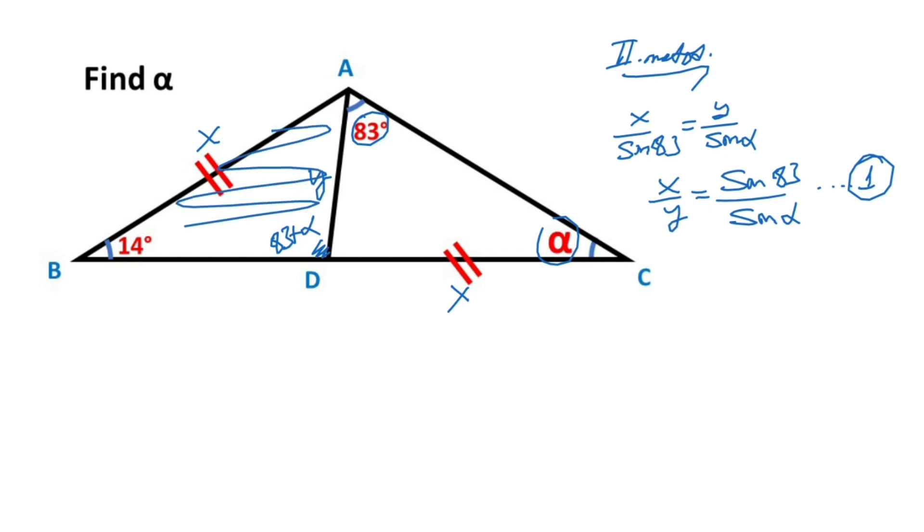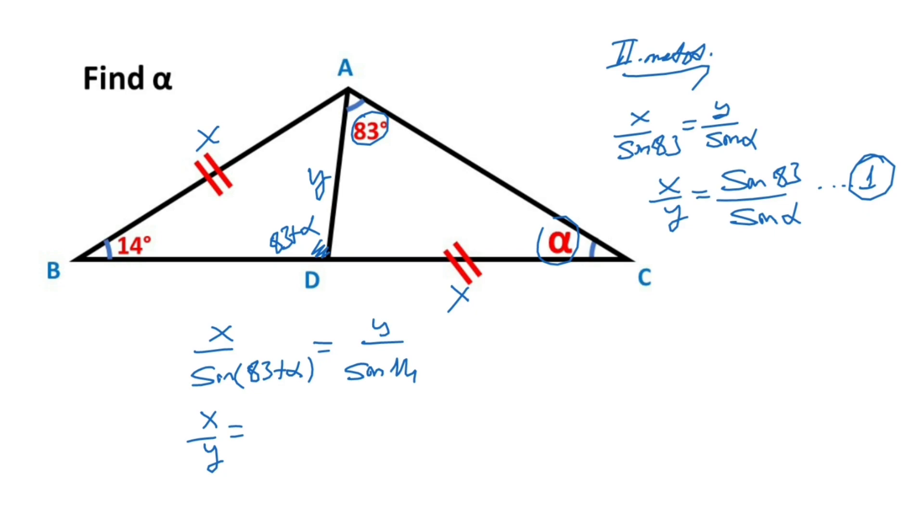And then for this triangle, let's apply sine rule again. X over sine 83 plus alpha equal Y over sine 14. And then X over Y equals sine 83 plus alpha over sine 14. This is the second equation.